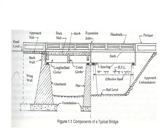This is a typical bridge cross section. As you can see in the figure, all the parts are shown: the approach slab, deck slab, expansion joint between the decks, handrails, parapet, high flood level, foundation, abutment, piers, girders, and the approach embankment.